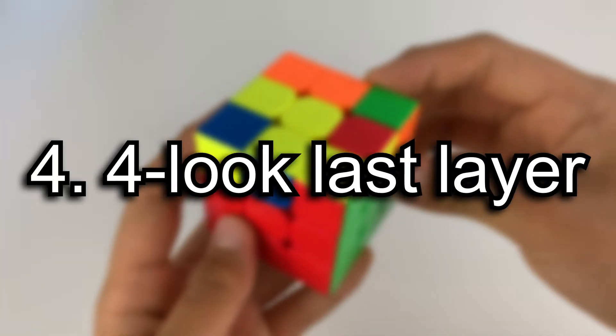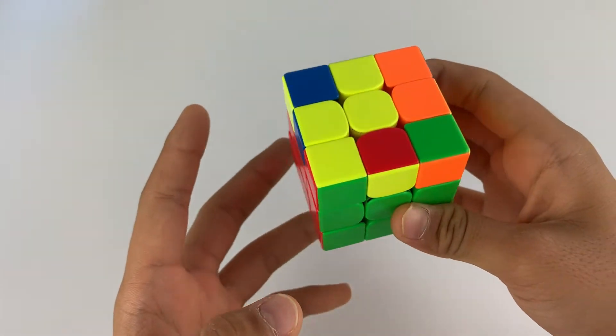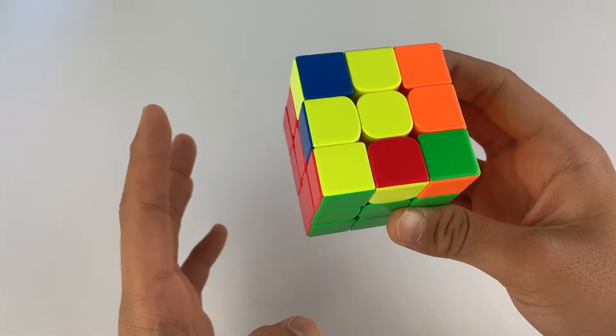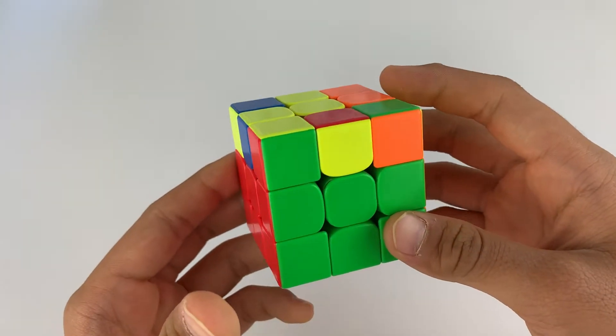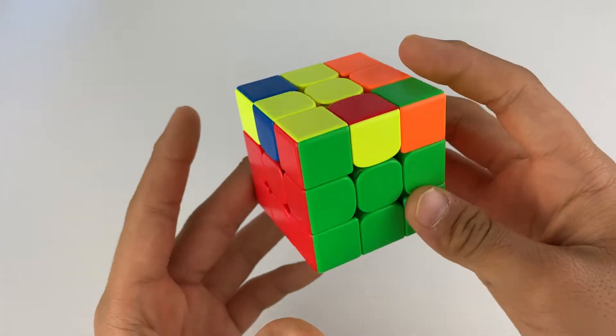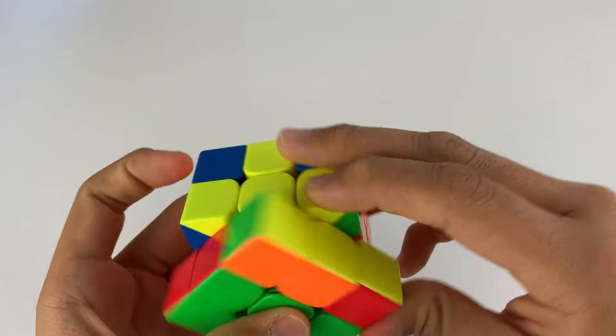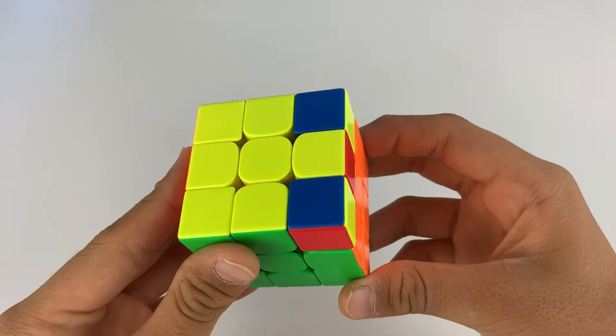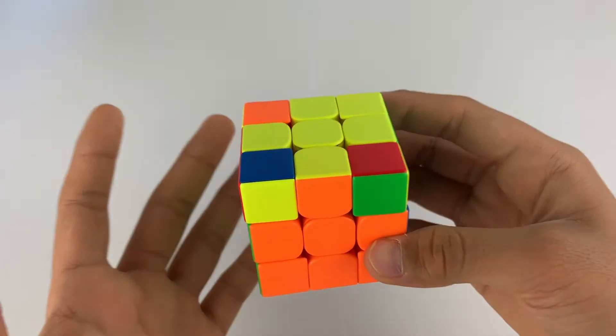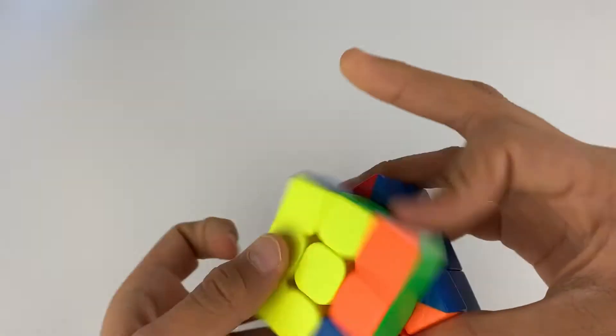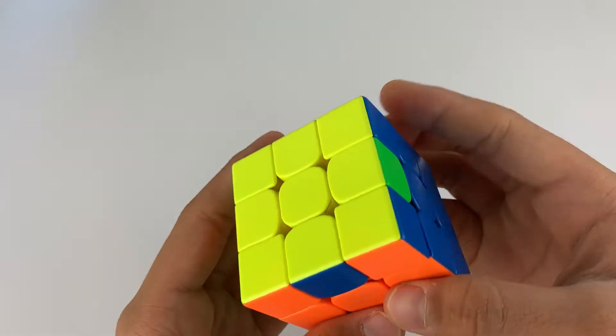Number four, four-look last layer. This one is more optional as you will have to learn algorithms to do it, but it's really useful once you learn. The first step of four-look last layer is the same as normal, get the top cross, but you'll have to learn one algorithm for each specific case that you get after solving the cross. You'll have to learn six algorithms for OLL and five algorithms for PLL.